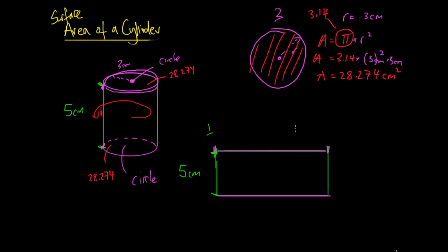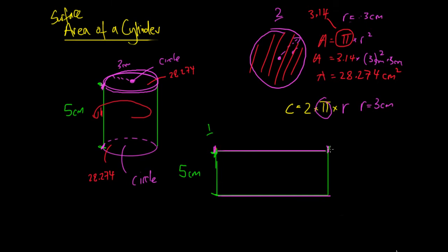What we can do is work it out. If you don't know how, you're welcome to check out the video on circumference. The circumference of a circle is equal to 2 multiplied by pi multiplied by the radius. We know 2 is a constant, pi is a constant, and the radius is 3 centimeters. So the circumference — which is the length of this side of the rectangle — is 2 times pi times 3, giving us 18.85 centimeters.